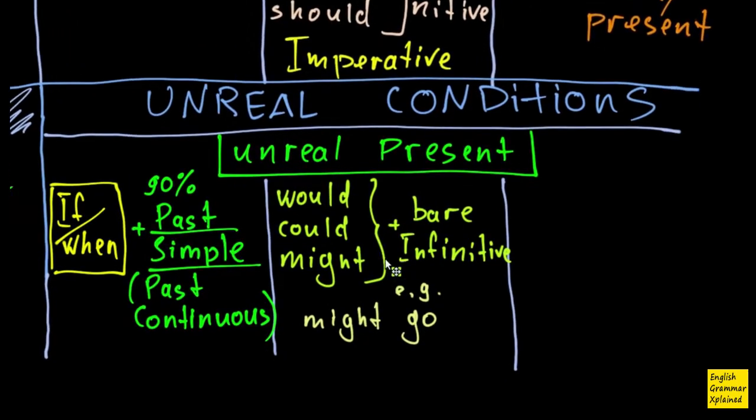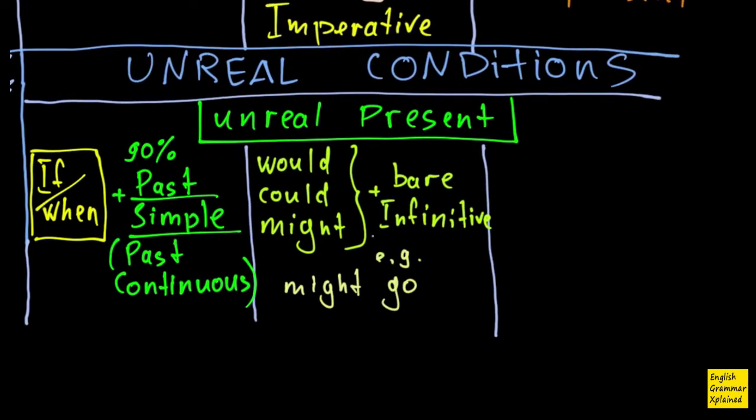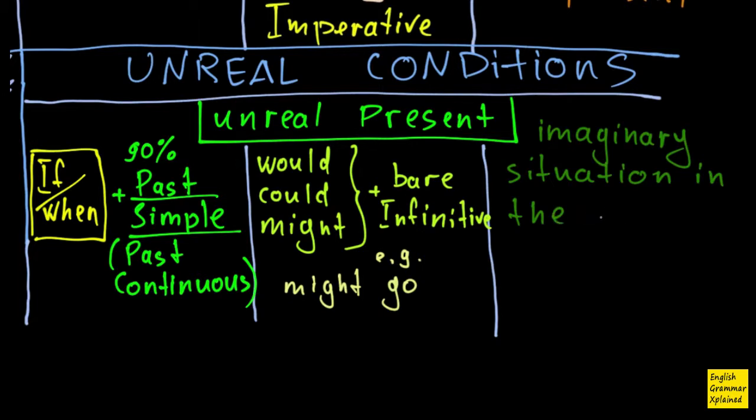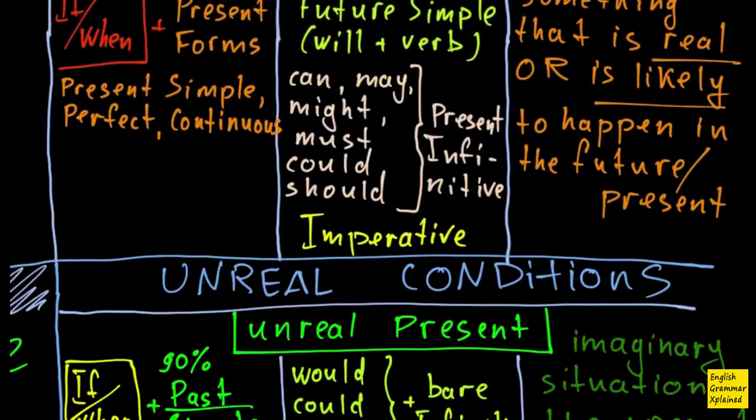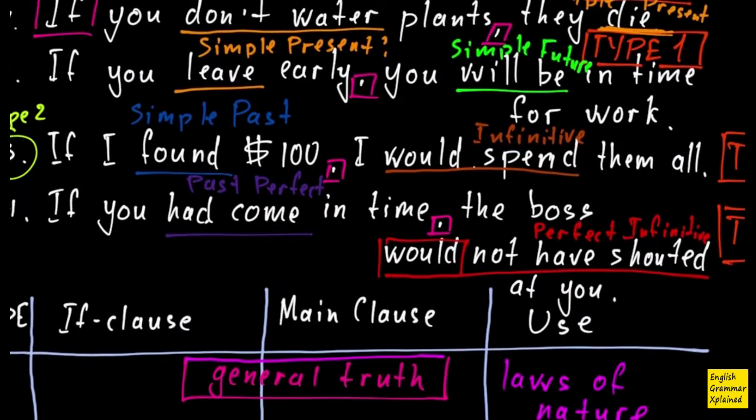So when to use this type two? If we talk about something unreal in the present, some imaginary situation. So this situation is not in reality, it's just in my head. If I look at my example again, here, if I found $100, I would spend them all. So what is here? In fact, I really didn't find any dollars, anything. I didn't find it, I don't find it, I'm not finding it, if you will. And that's all in my head. So I cannot spend anything. But I imagine the situation, and I talk about it.